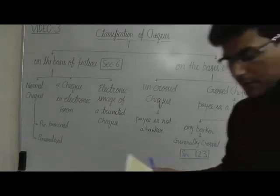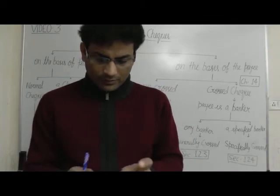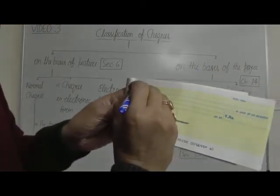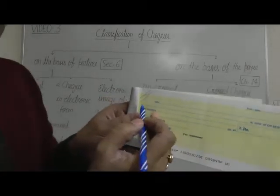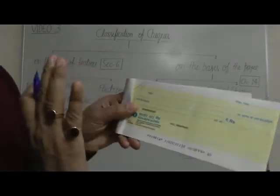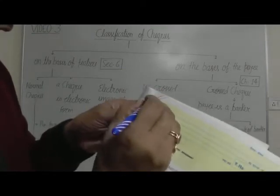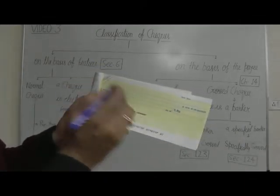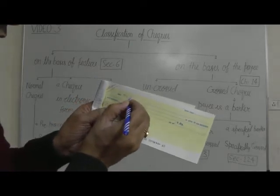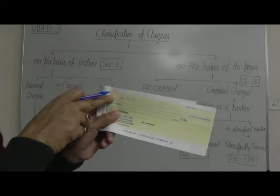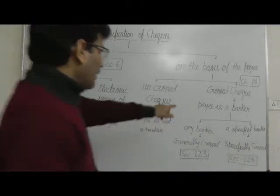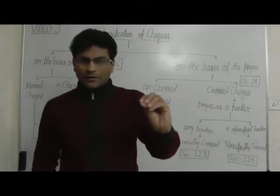How is a check crossed? I am going to show you. To cross a check, one has to draw two parallel lines across its face. Just the lines are sufficient, or one can write 'and company' between them. This is a general cross. Imagine a check is issued in favour of Mr. X and the check has been crossed. Because the check has been crossed, X is not entitled to get the money in hand. The crossed check is paid to a banker — the banker in which Mr. X has an account.